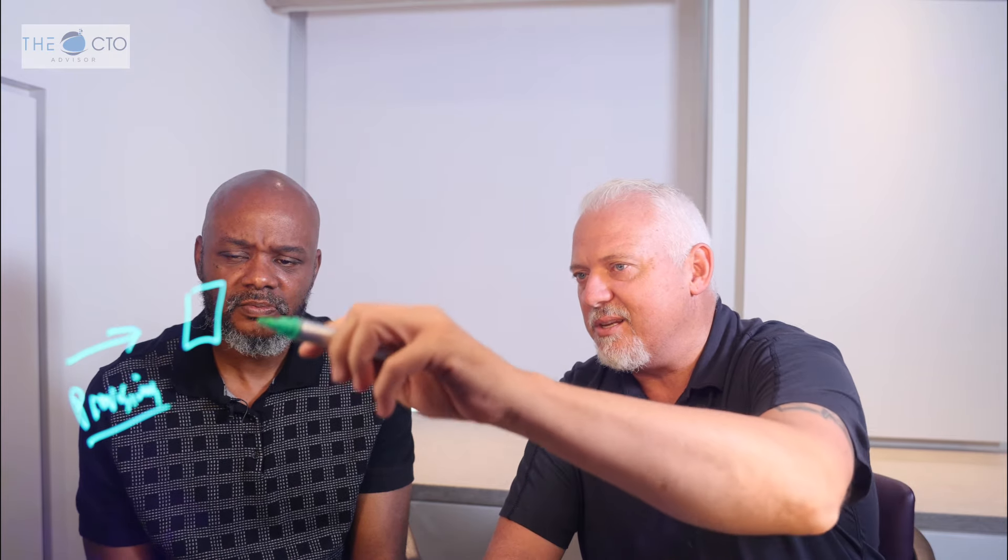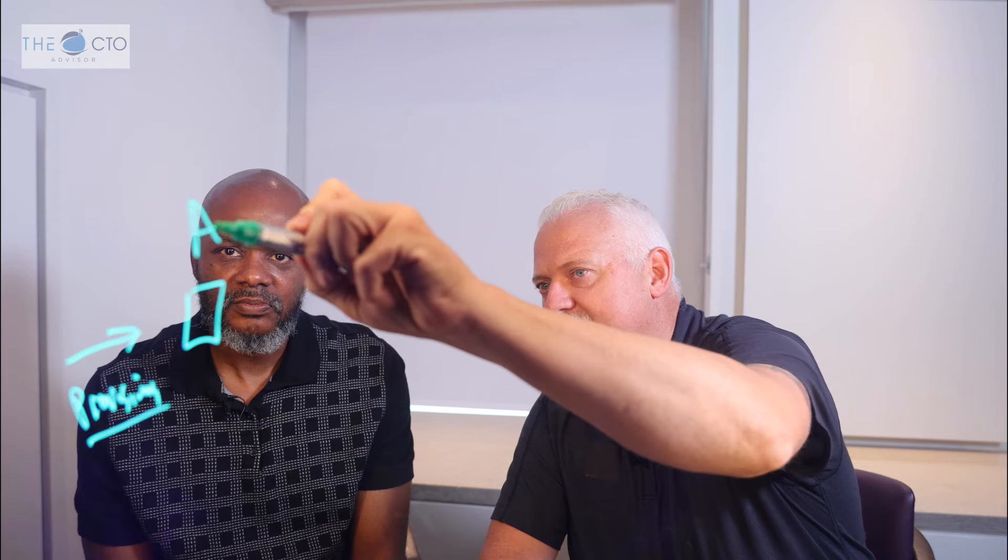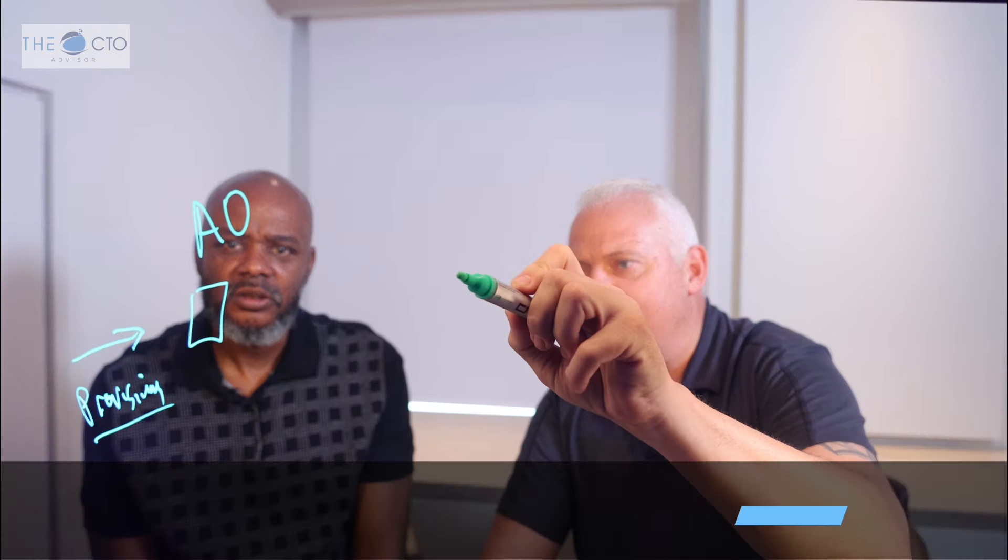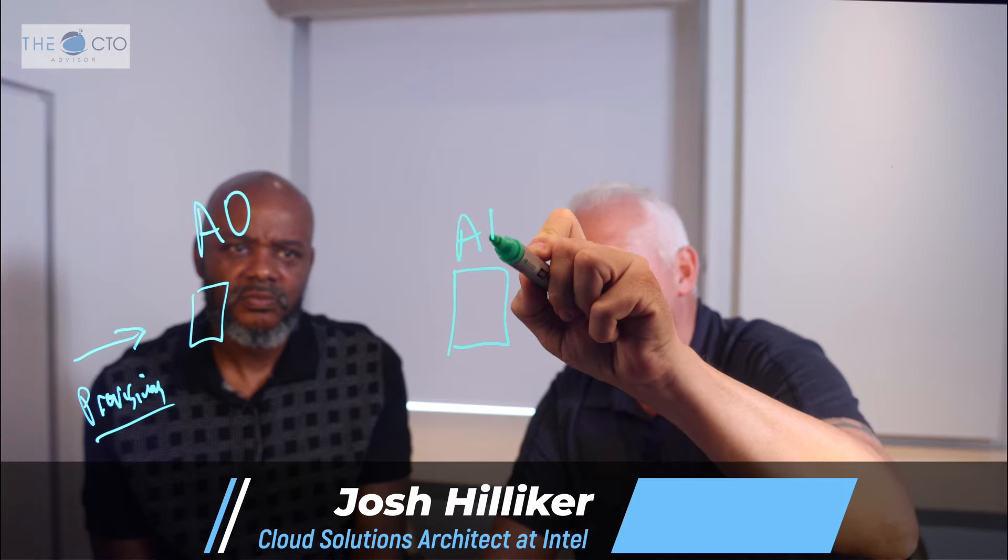So think of this as kind of the start, this is my A0 state, right? When I am in the cloud and I'm operating already, we'll call it my A1 state.